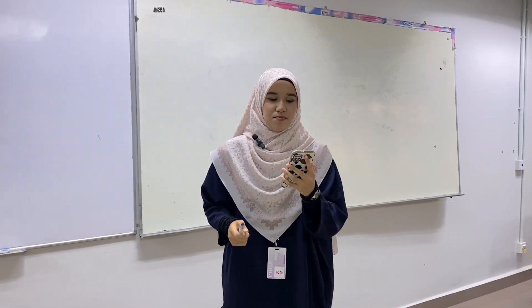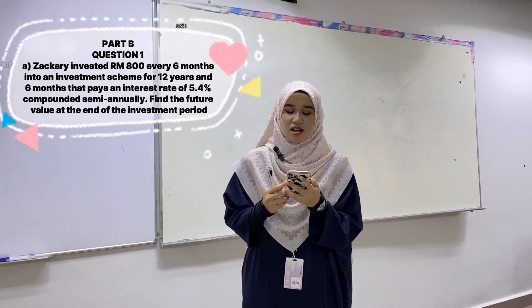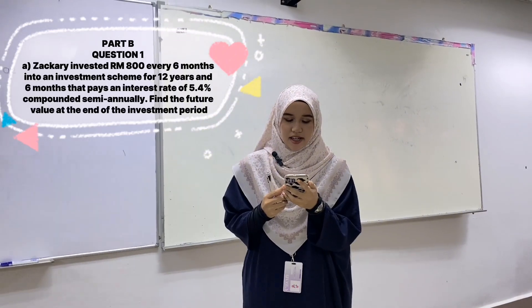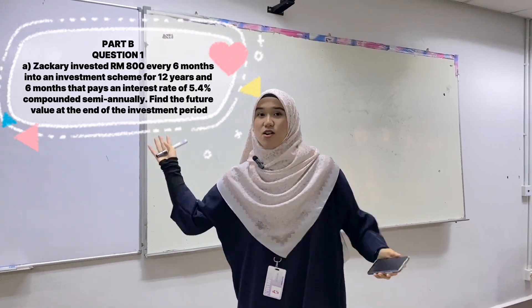Let's go to Part B question 1. For A, ZP invests RM800 every 6 months into an investment scheme for 12 years and 6 months that pays an interest rate 5.4% compounded monthly. Find the future value at the end of the investment period.